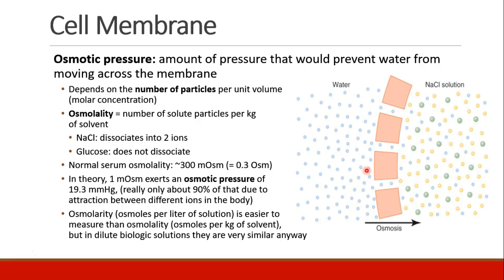This process is driven by what we call osmotic pressure — the amount of pressure that would push back in the other direction in order to prevent water from moving across the membrane. Osmotic pressure depends on the number of particles per unit volume, the molar concentration. Osmolality is the number of particles of solute per kilogram of solvent. For example, sodium chloride dissociates into two ions, so every molecule of sodium chloride makes two solute particles, compared with glucose, which does not dissociate, so each molecule is one solute particle.